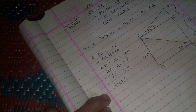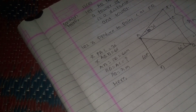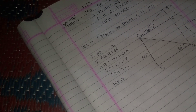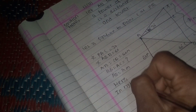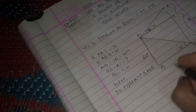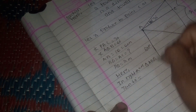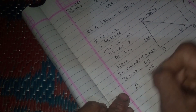In right angle triangle ABQ, using tan theta with 60 degrees: tan 60 equals AB divided by BQ, which gives root 3 equals 60 divided by BQ.